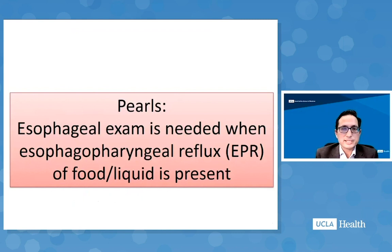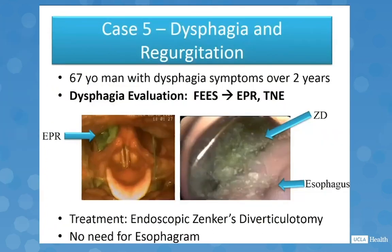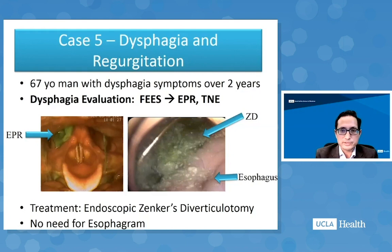Esophageal exam is needed when esophagopharyngeal reflux of food or liquid is present. A 67-year-old man with two years of dysphagia symptoms had a swallow evaluation showing green material in the right pyriform sinus that had been swallowed and then regurgitated back into the throat. The patient gave a history of food immediately coming back up after eating. TNE showed a Zenker's diverticulum — the esophageal opening anteriorly and the diverticulum posteriorly containing the food and liquid just tested. With this confirmed diagnosis, no esophagram was needed and we could proceed to endoscopic myotomy.